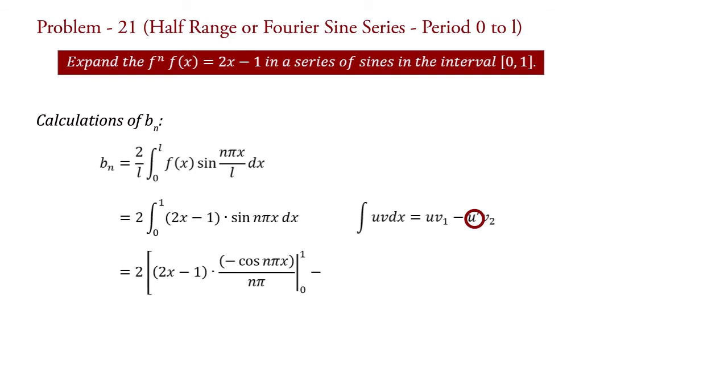Minus u', i.e., differentiation of 2x - 1, which is 2. So we will write here 2 times v₂, i.e., integration of -cos(nπx)/nπ. Therefore, we will write here -sin(nπx)/(nπ)² from 0 to 1.